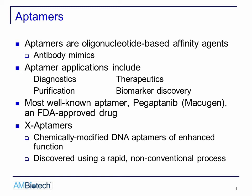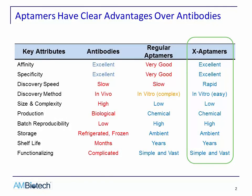By far, the most well-known aptamer is pegaptanib, otherwise known as Macugen. This is an FDA-approved drug for the treatment of age-related macular degeneration. What I would like to talk about today is a special type of aptamer called X-aptamers. These are chemically modified DNA aptamers of enhanced function, and they are discovered using a rapid, non-conventional process. Here is a quick comparison of antibodies versus aptamers, as well as X-aptamers.